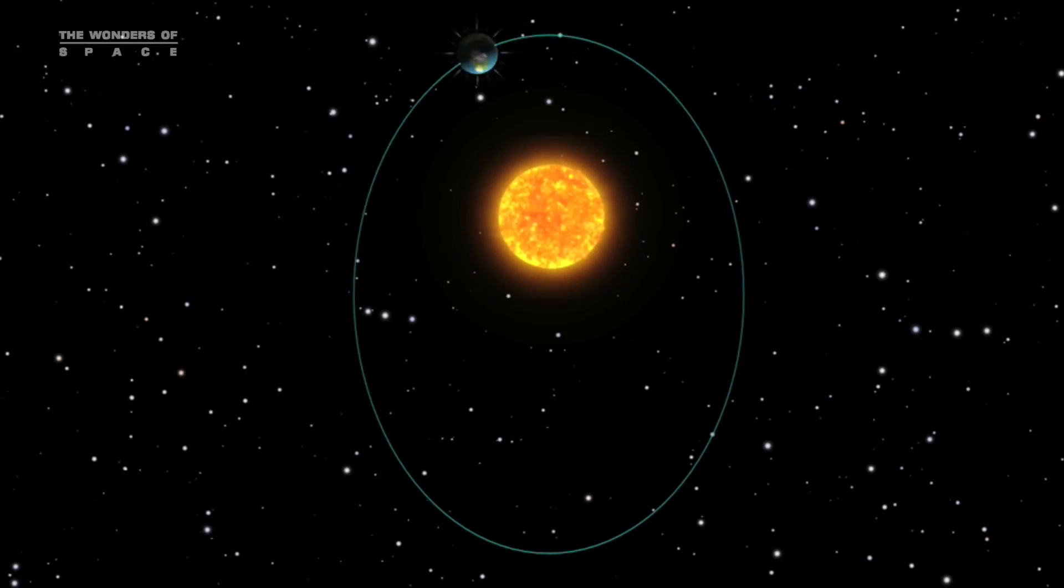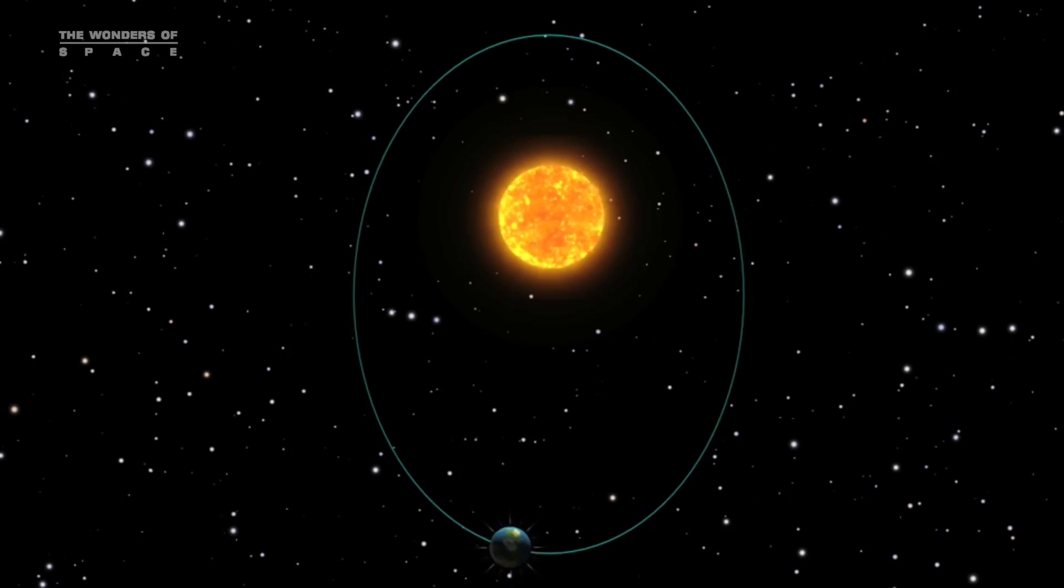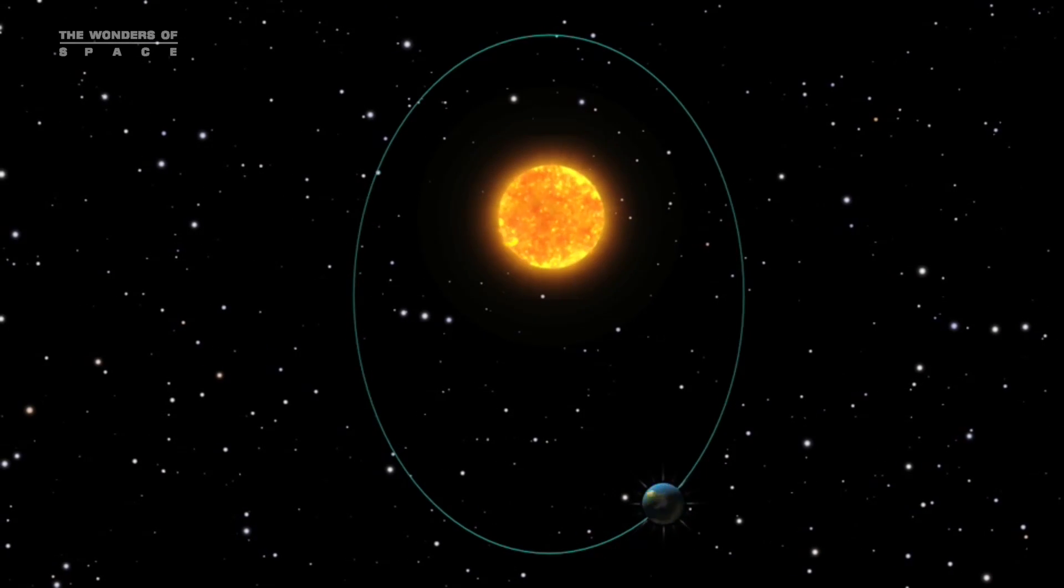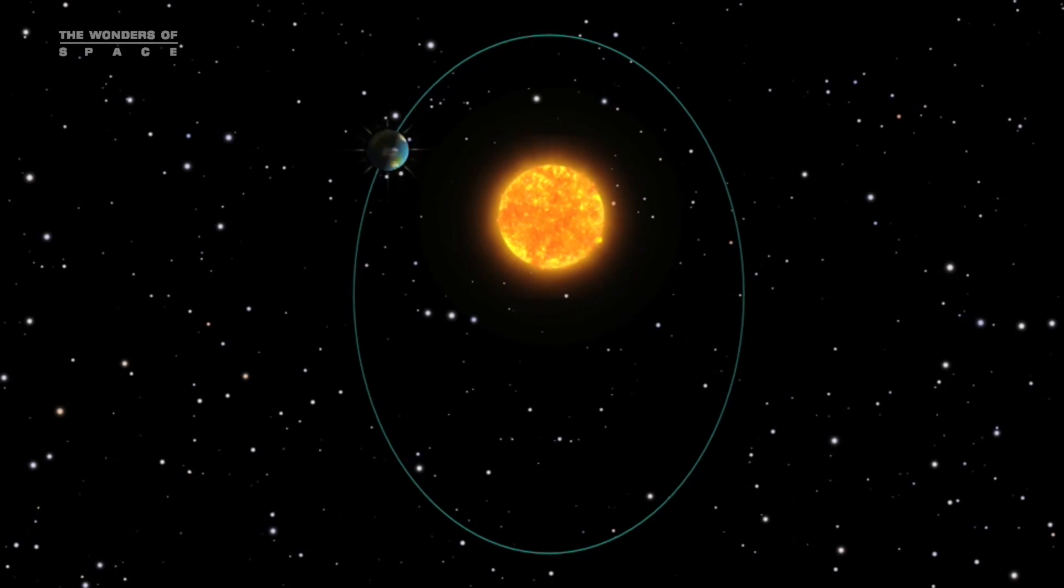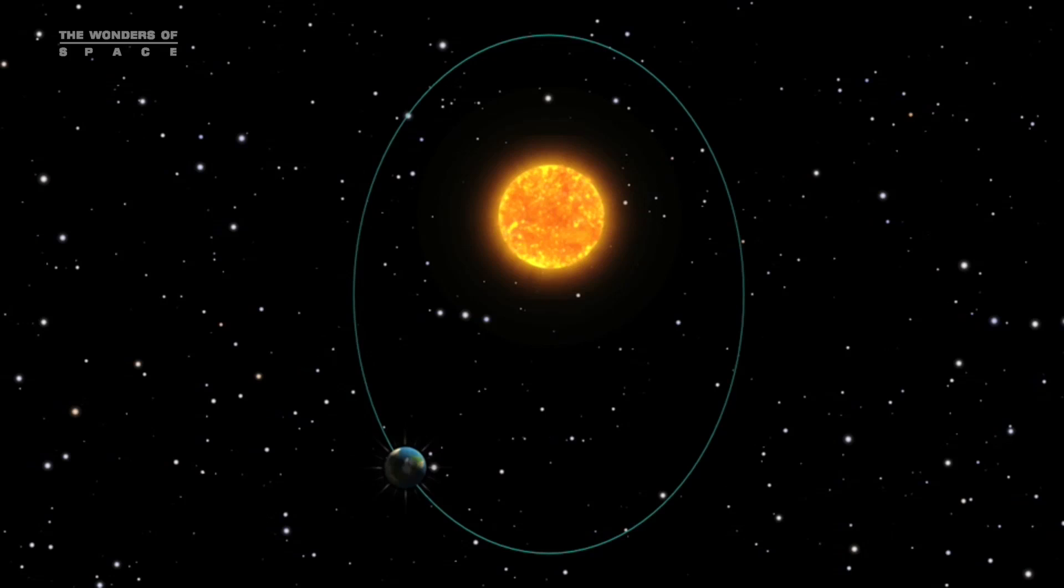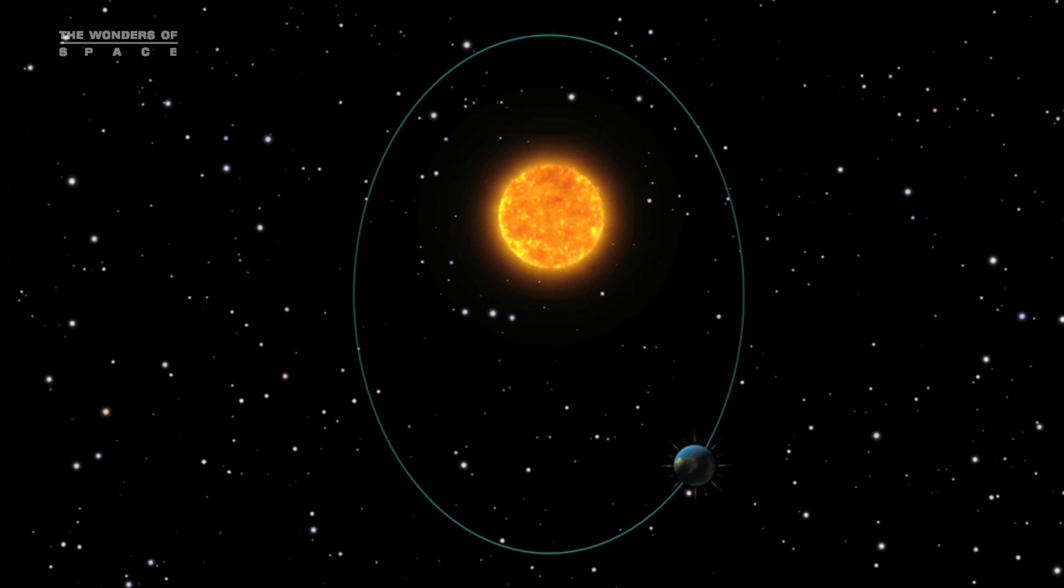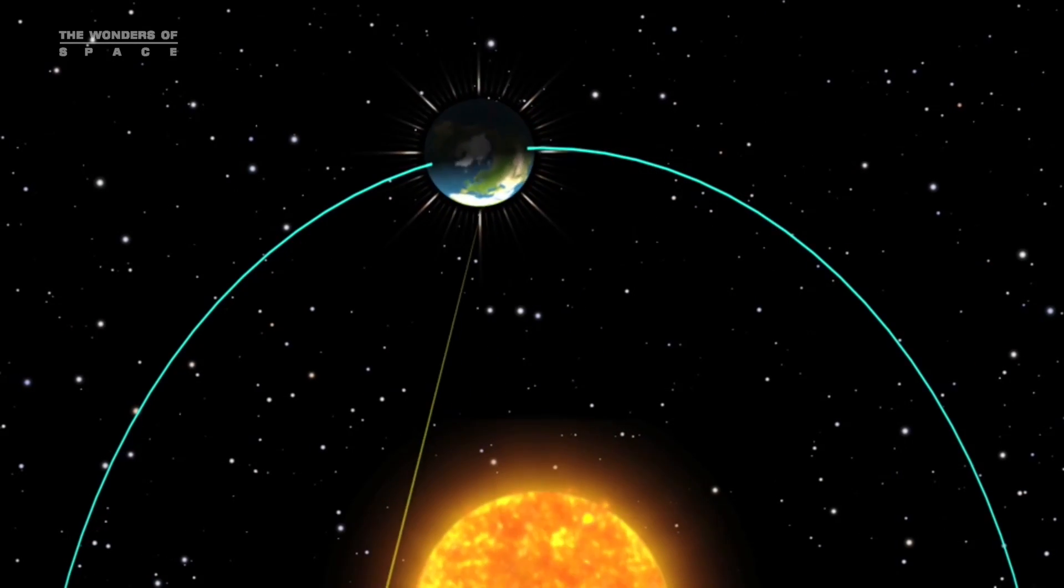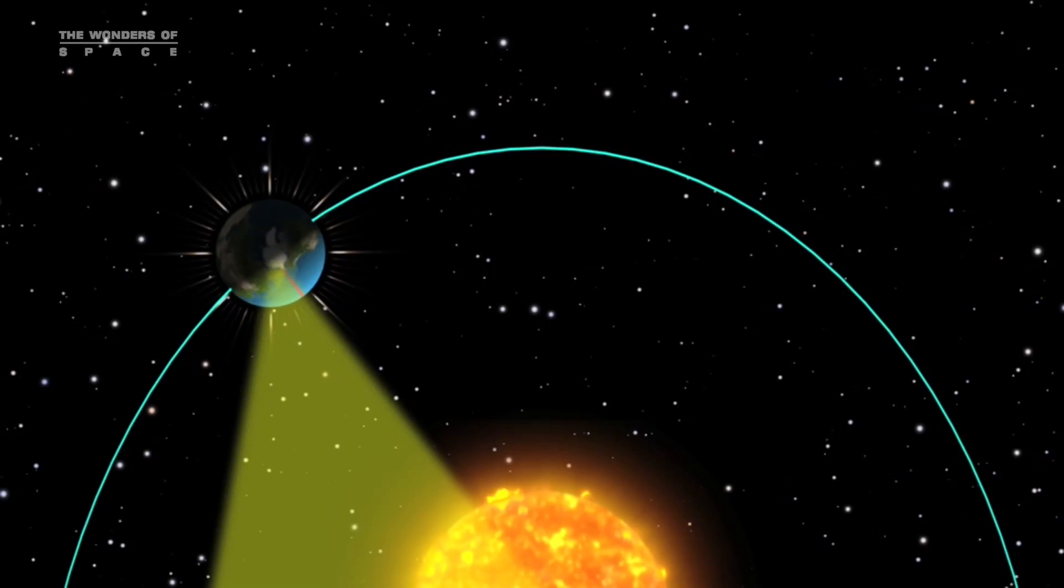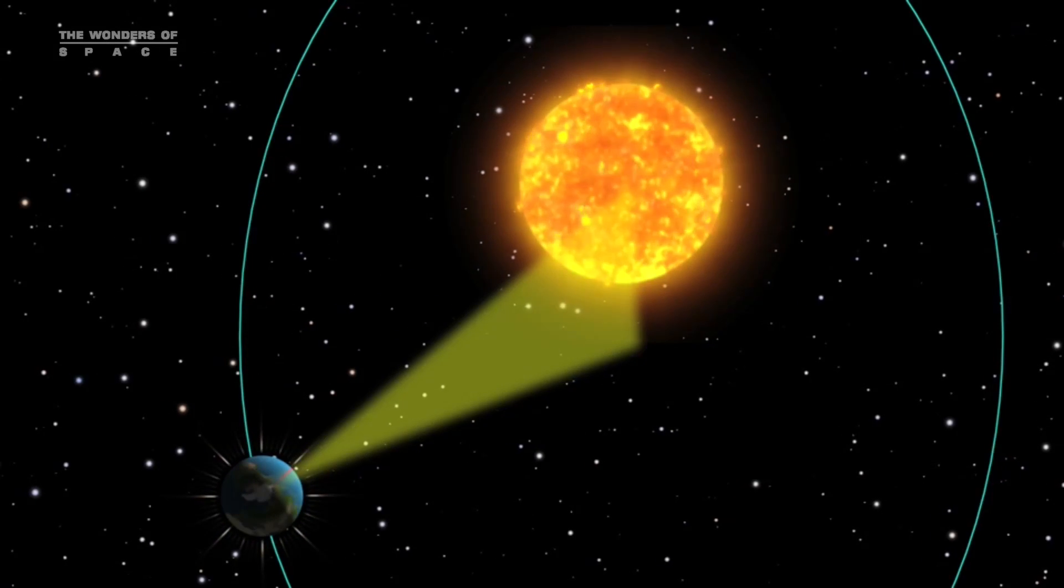Not only that, the length of the solar day varies throughout the year, and for two different reasons. First, because its orbit is an ellipse and not a circle, the Earth moves faster when it is near the Sun and slower when it is further from the Sun. So the little extra amount of rotation that the Earth needs to do to get from noon to noon changes throughout the year.